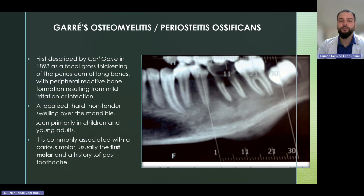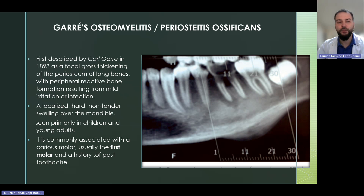Garré's osteomyelitis, also called proliferative periostitis or periostitis ossificans, was first described by Carl Garré as a focal gross thickening of the periosteum of long bones with peripheral reactive bone formation resulting from mild irritation or infection. It presents as a localized, hard, non-tender swelling over the mandible, seen primarily in children and young adults. It is commonly associated with a carious molar, usually the first molar, and a history of past toothache.